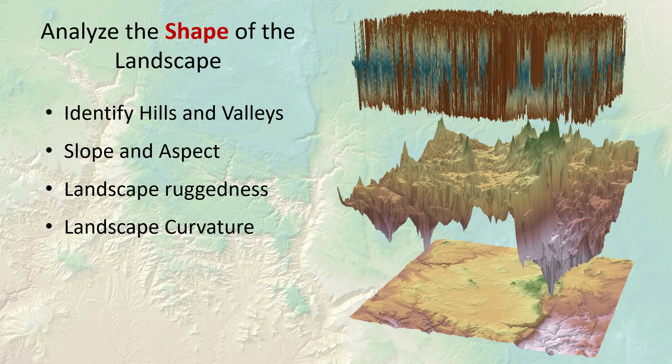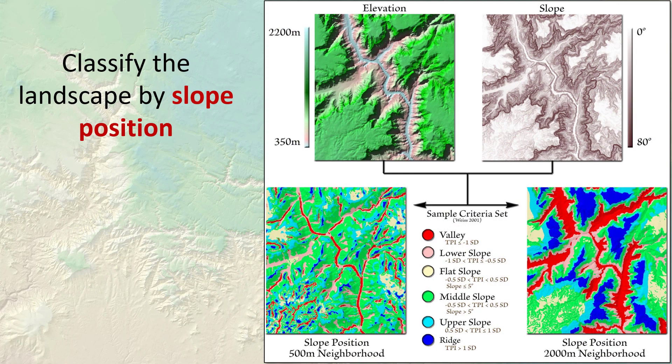GIS is also good for analyzing the shape of the landscape. We can identify hills and valleys, calculate slopes and aspects, and estimate the ruggedness of a landscape in lots of different ways. There's also curvature, which tells you whether water accelerates or decelerates as it flows over the surface, or whether water diverges or converges. You can classify the landscape in a variety of different ways — in this example, we're classifying by slope position using something called the topographic position index. For this analysis, we first calculate the slope from the DEM, the digital elevation model. We can then use both the DEM plus the slope in combination to define ridge tops, valley bottoms, etc. And even better, we can make this sensitive to scale so we can do it at different scales.